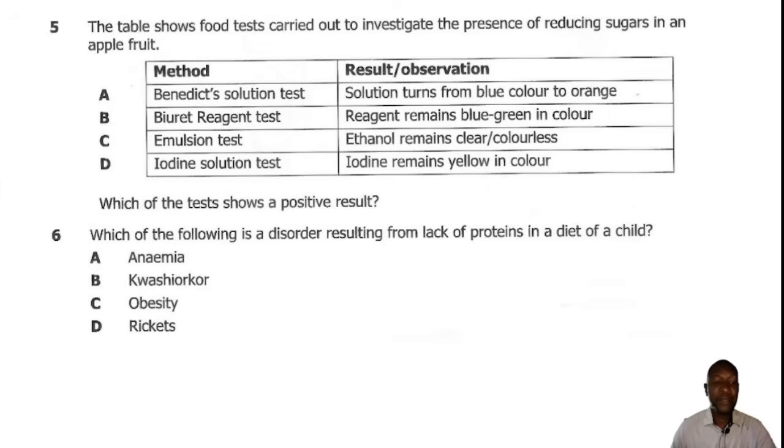Question 5. The table shows food tests carried out to investigate the presence of reducing sugars in an apple fruit. When you are carrying out the test for reducing sugar, the method we use is the Benedict's test. And the results for a positive test is that the solution will turn from blue to green to yellow to orange, or finally, brick red. So the correct answer is A.